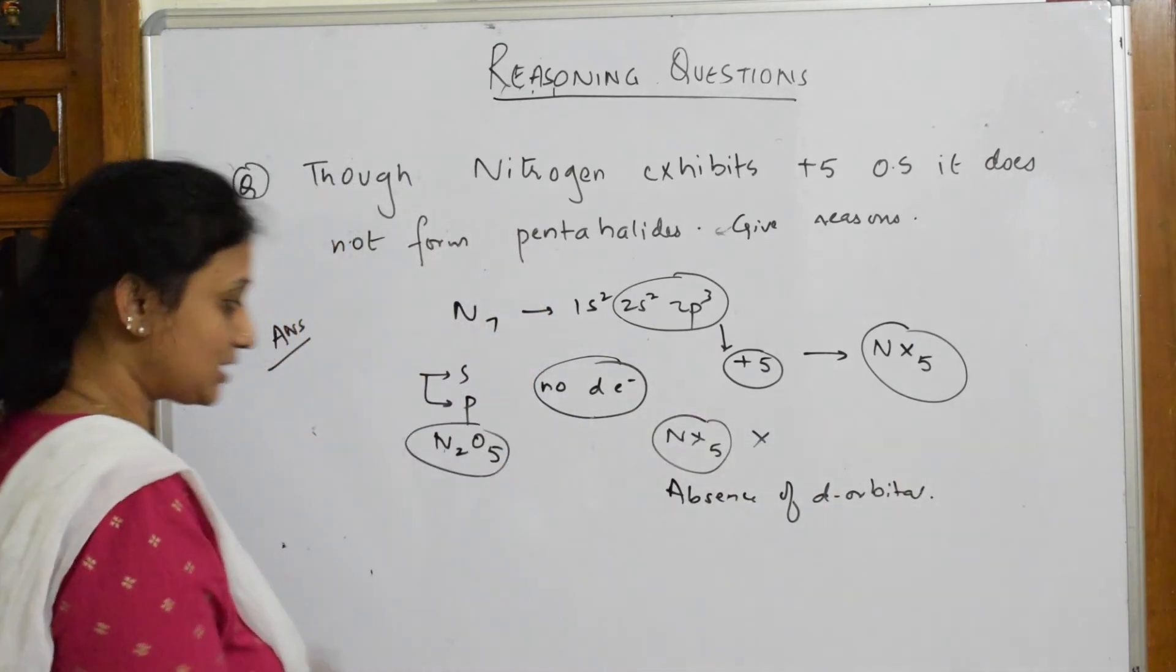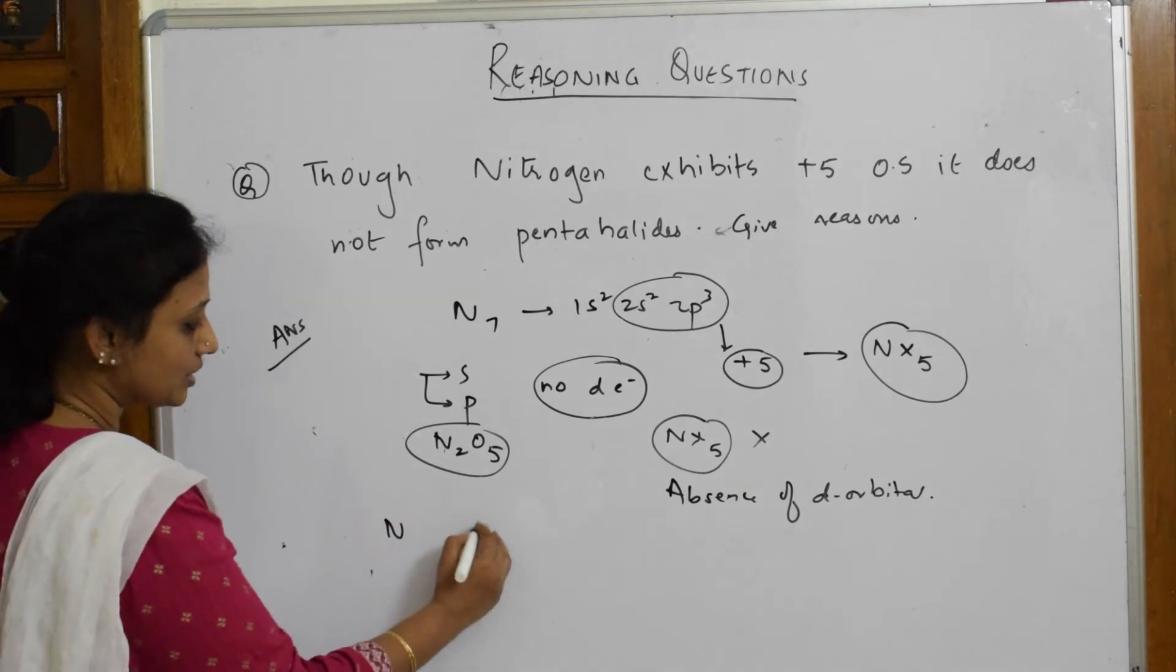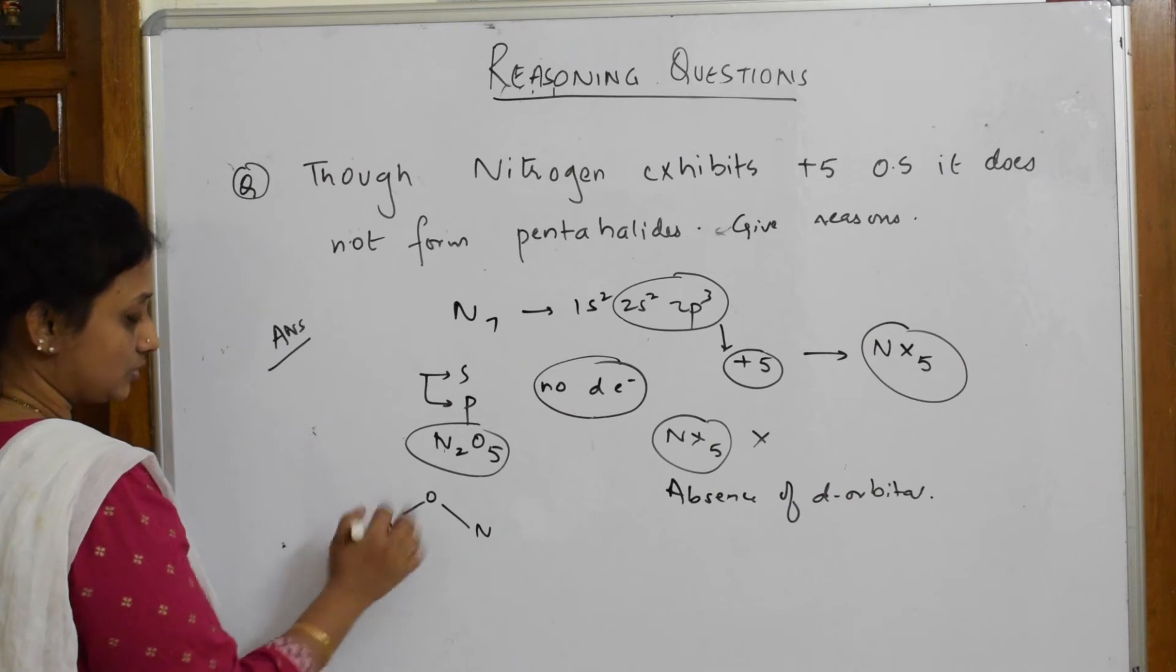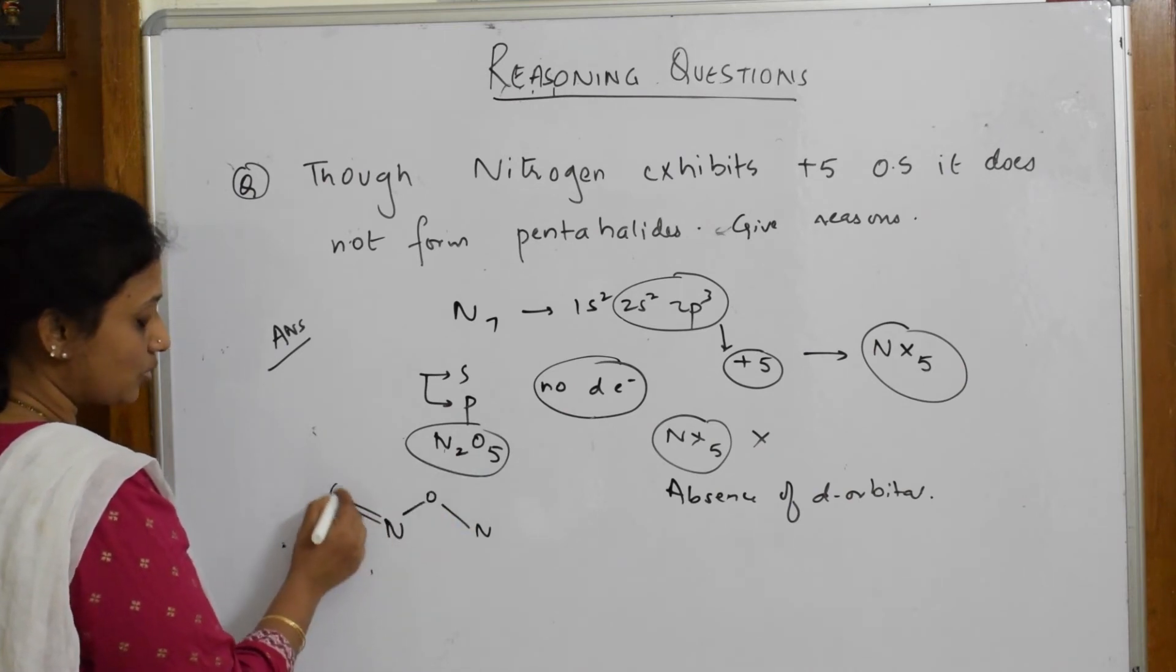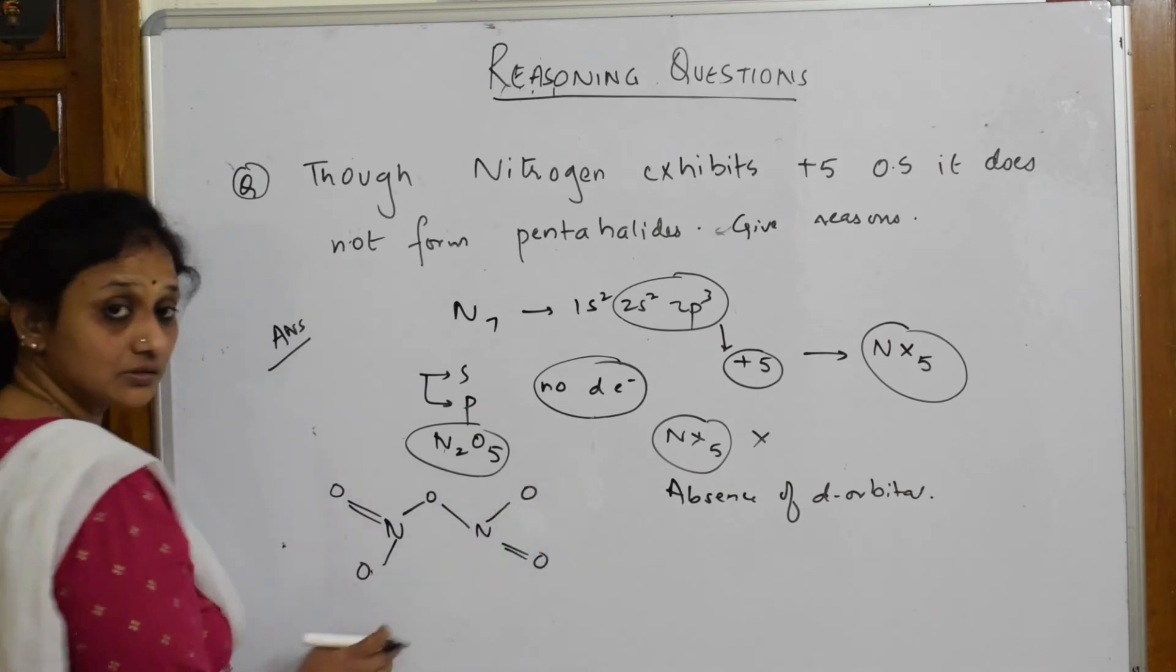But here, what happens in N₂O₅? Let's write the structure: nitrogen-nitrogen, one oxygen, one oxygen - there are five, four more. Double bond O, double bond O, one oxygen here, one oxygen here.